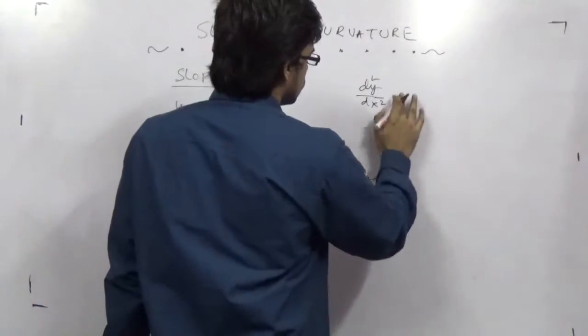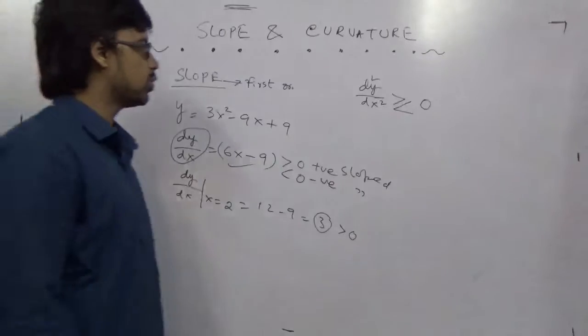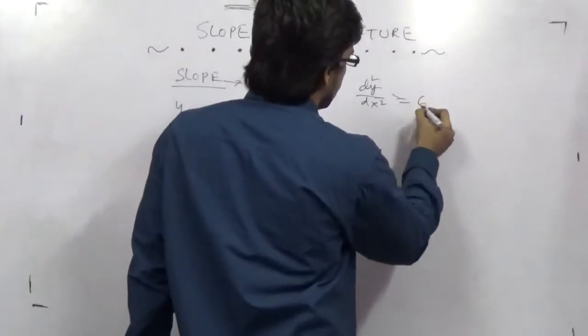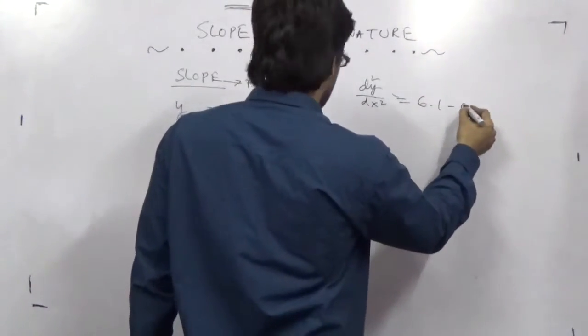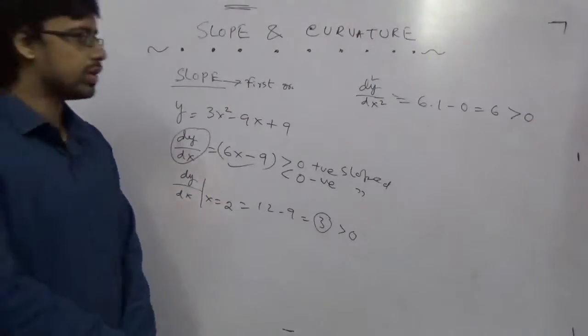d²y/dx² may be either greater than 0 or less than 0. In this case, it will be 6, which makes it positive. So there are two types of curvature.